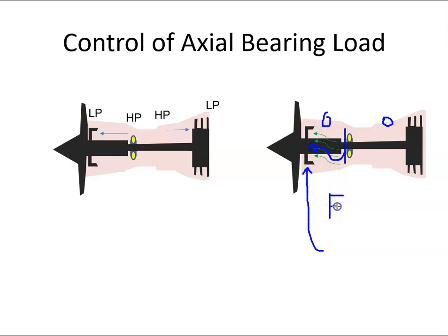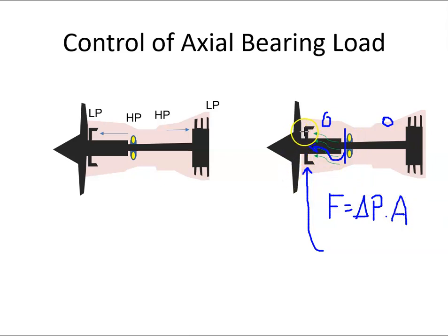So the sum of all the forces is equal to zero. Whatever pressure we're acting on this pressure balance seal, multiplied by the area of the pressure balance seal, that force should be enough to equalize the forces that were originally going in this direction and in that direction. And we call that the pressure balance seal.